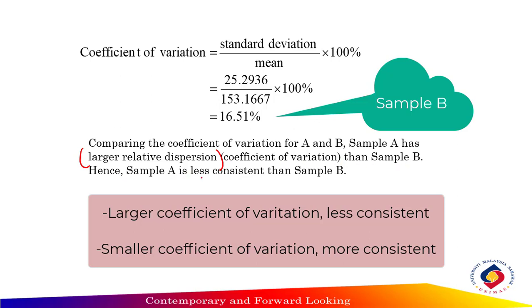Hence, sample A is less consistent than sample B. The smaller the coefficient of variation, the more consistent the sample. And the larger the coefficient of variation, the less consistent the sample. So that's why sample A is less consistent than sample B.